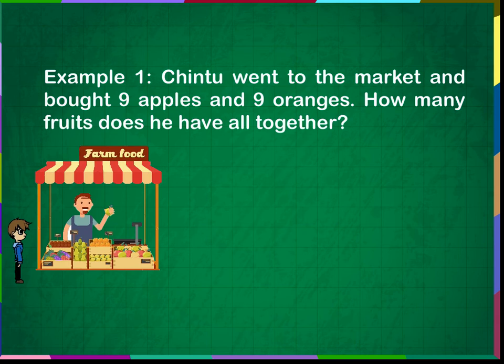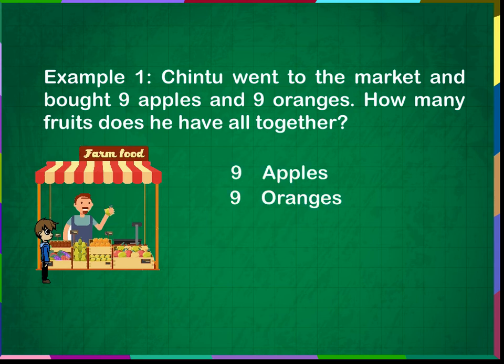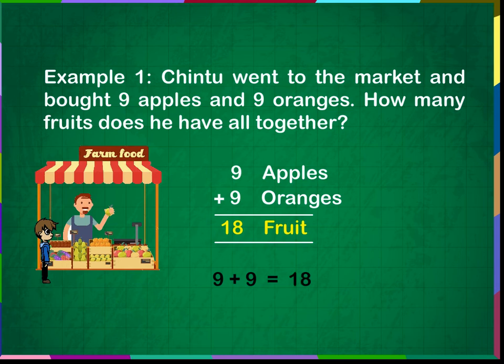Example 1: Chintu went to the market and bought 9 apples and 9 oranges. How many fruits does he have altogether? 9 apples and 9 oranges make 18 fruits. 9 plus 9 is equal to 18. Chintu has 18 fruits altogether.